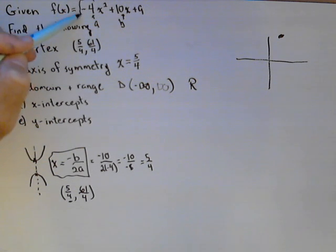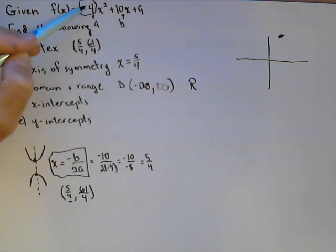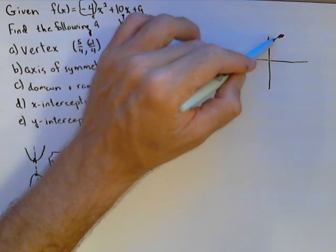Remember, we look at the a to determine that. The coefficient of x squared. It's negative so it'll open downwards.